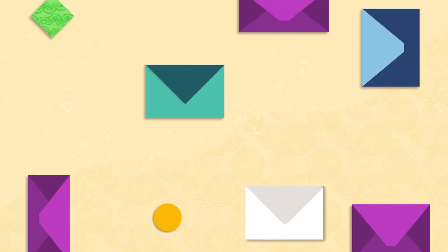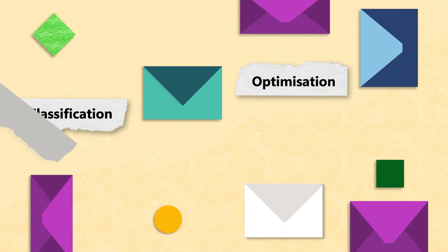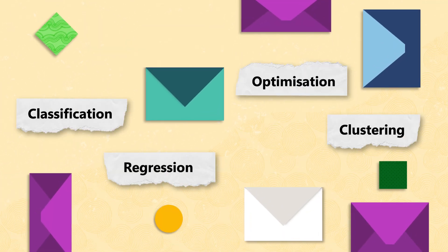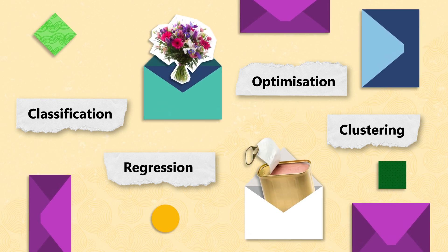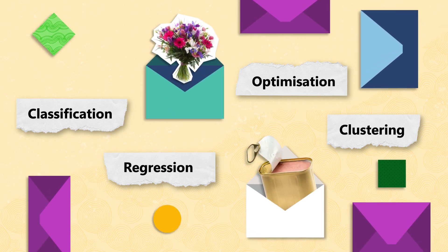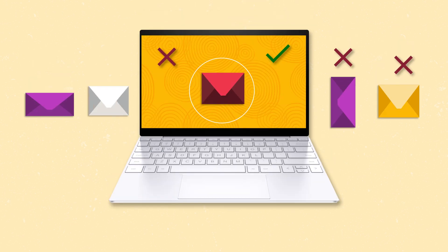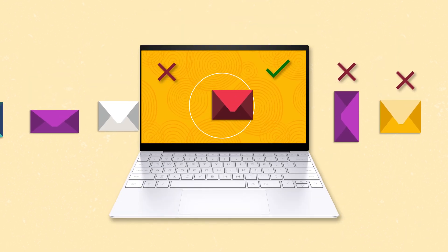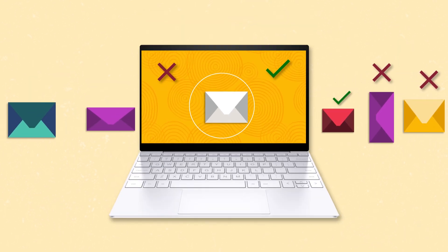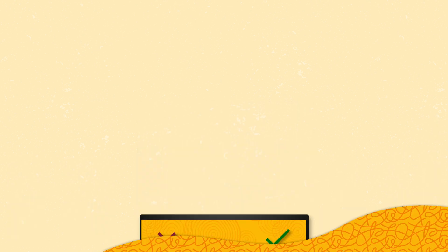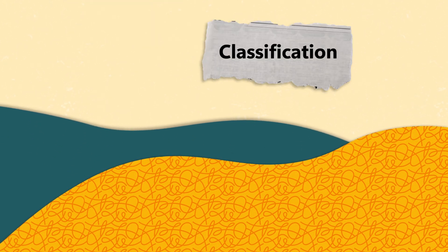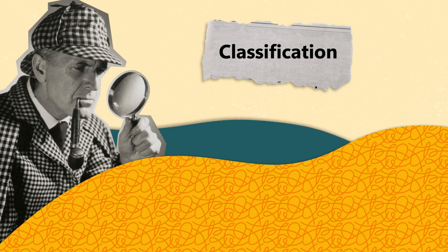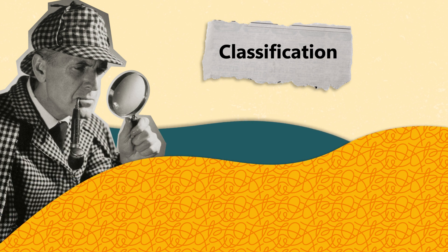There are a few main types of these algorithms. Imagine you are sifting through your emails — some are important, others not so much. How does your email service know which ones to put in your inbox and which ones to label as spam? That is the work of a type of algorithm called classification. It is like a detective, sorting each email into spam or not spam.